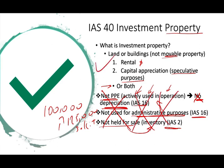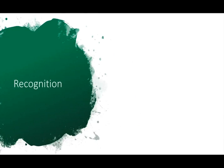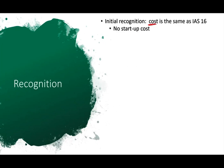Recognition is important. Initial recognition is when we first recognize the asset, and subsequent recognition covers what happens in later years. The initial recognition is straightforward — just like any asset you purchase, such as inventory or financial instruments, it is initially recorded at cost, just like IAS 16. There is no startup cost, and no operating loss in the pre-rental stage. For subsequent recognition — year two, year three, and so on — you have two options, just like IAS 16.